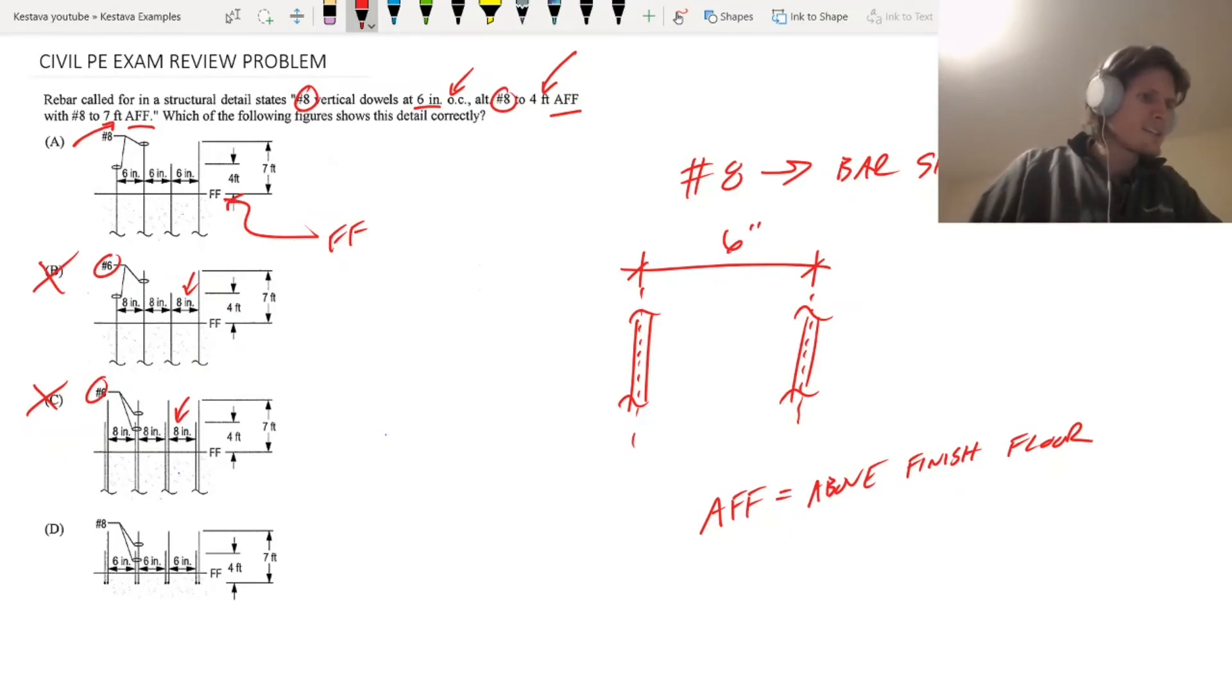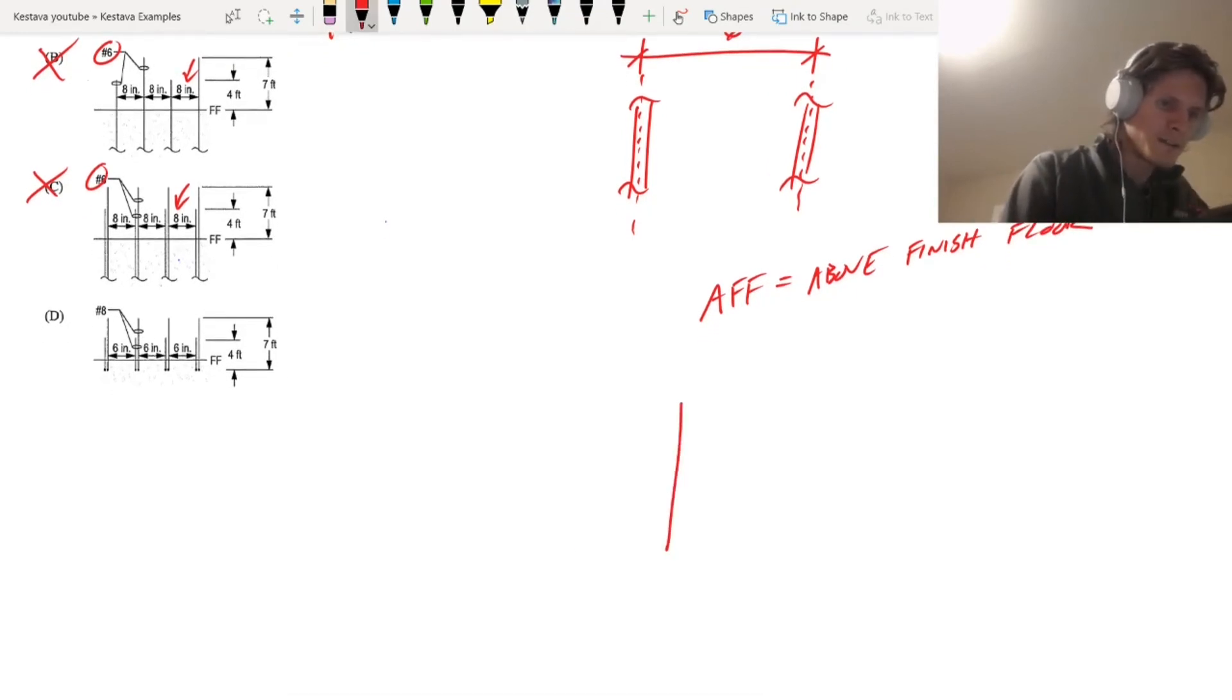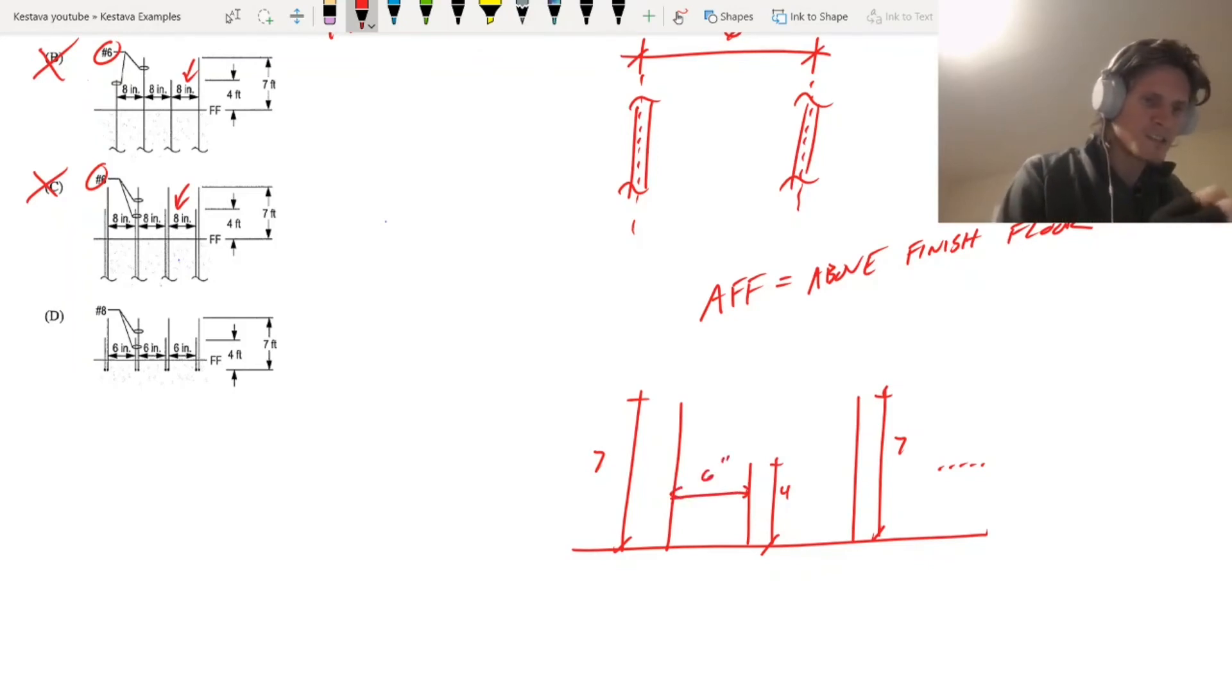They give one more dimension here: 4 feet and then 7 feet AFF. So what they are saying is that the vertical dowels stick out 4 feet above the finished floor and then they alternate sticking out 7 feet above finished floor. So you have alt here, that stands for alternating. That means you're going to have one bar sticking out 7 feet, then your next bar sticking out 4 feet, then your next bar sticking out 7 feet, and so on. They alternate back and forth, and again we have a spacing of 6 inches. That's typical.